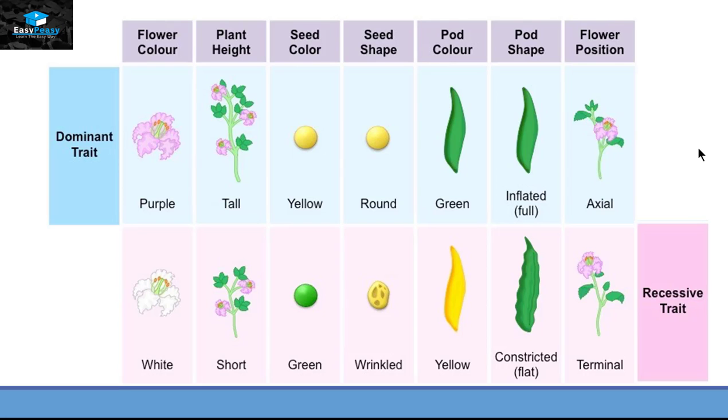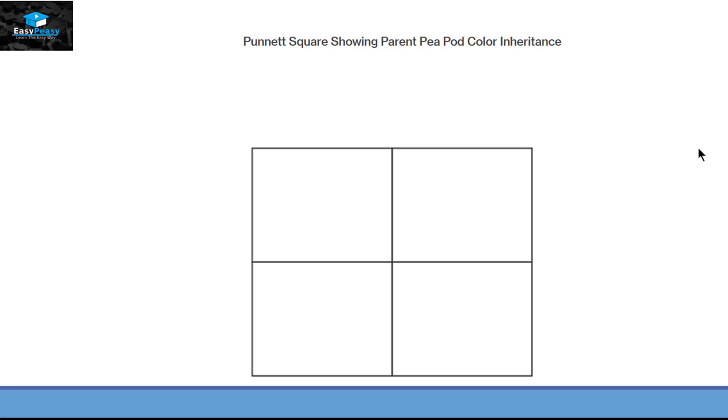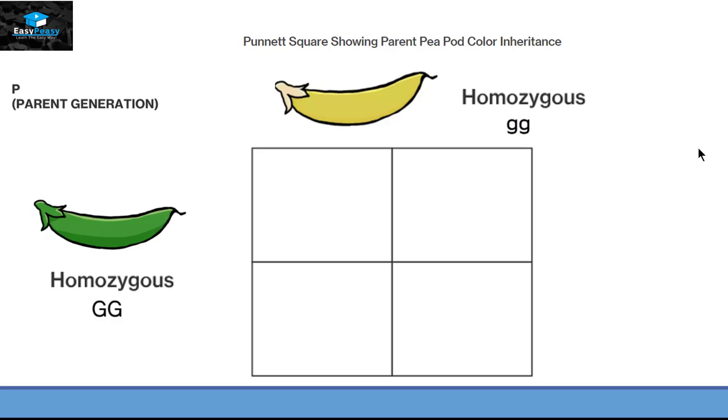With all this information, let's verify the experiment did by Mendel. We are going to use the Punnett square for the parent pea pod color inheritance. As the parent generation have the true breed homozygous green pod having capital G, capital G as a gene and true breed yellow homozygous plant having small g and small g, we are going to put capital G and capital G over here and this small g, small g over here.